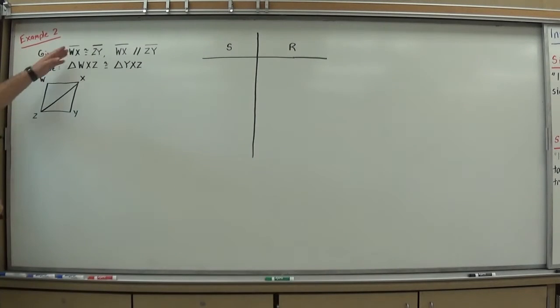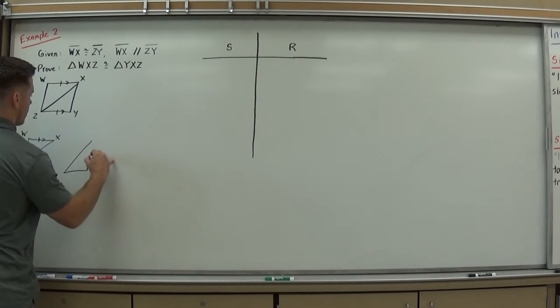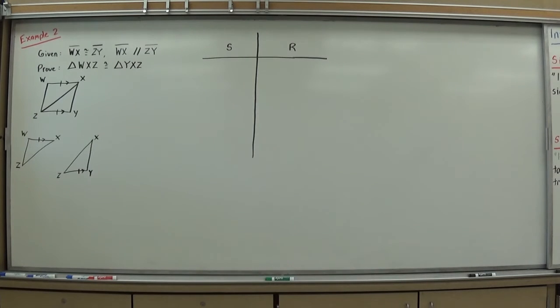All right. Next proof. Let's go ahead and get started. This is, given WX is congruent to ZY and then WX is parallel to ZY, they want us to prove that these two split triangles are congruent. We've got triangle WXZ and triangle YXZ. So, let's start by marking our diagram. I have WX is congruent to ZY and that WX is parallel to ZY. Now, I'm going to start by drawing them separately. W, Z, X, congruent, parallel, and ZY, X, and ZY is congruent and parallel.